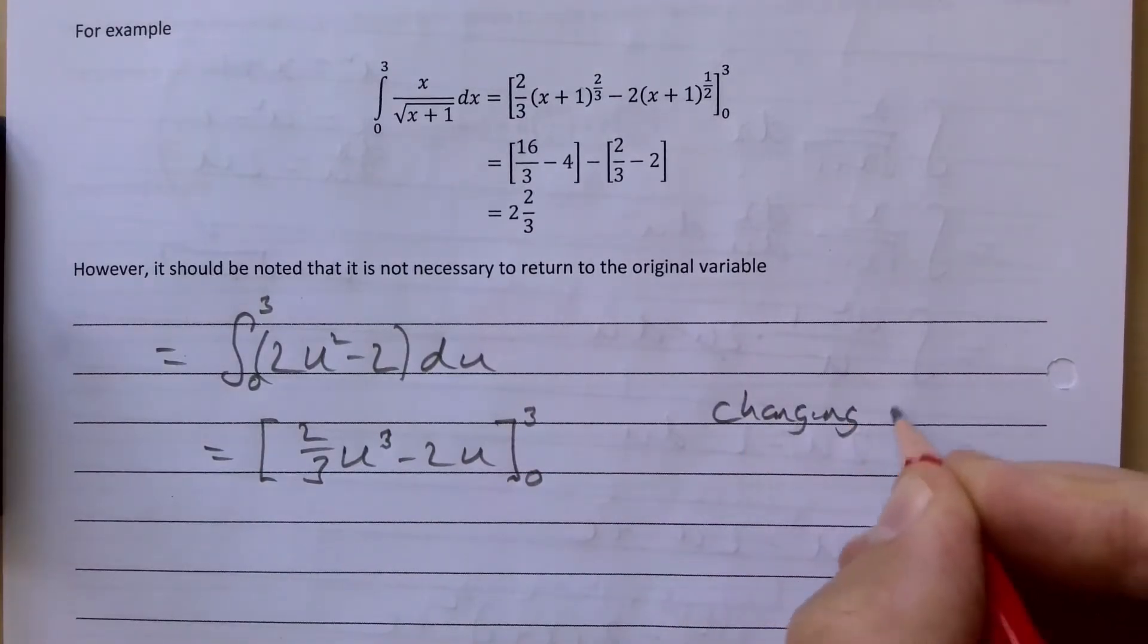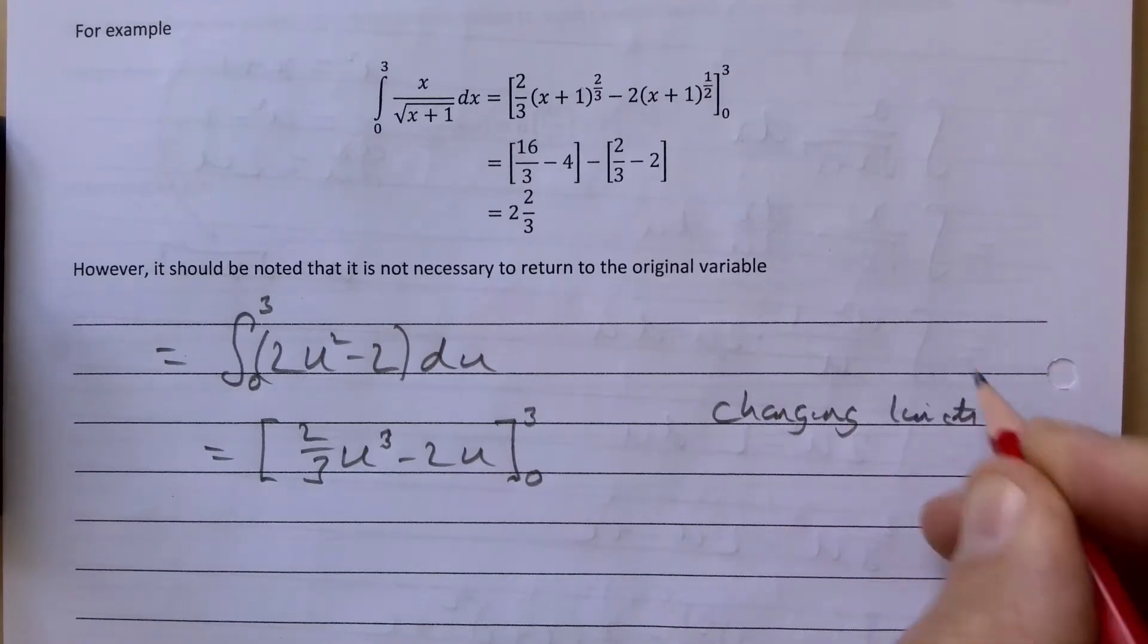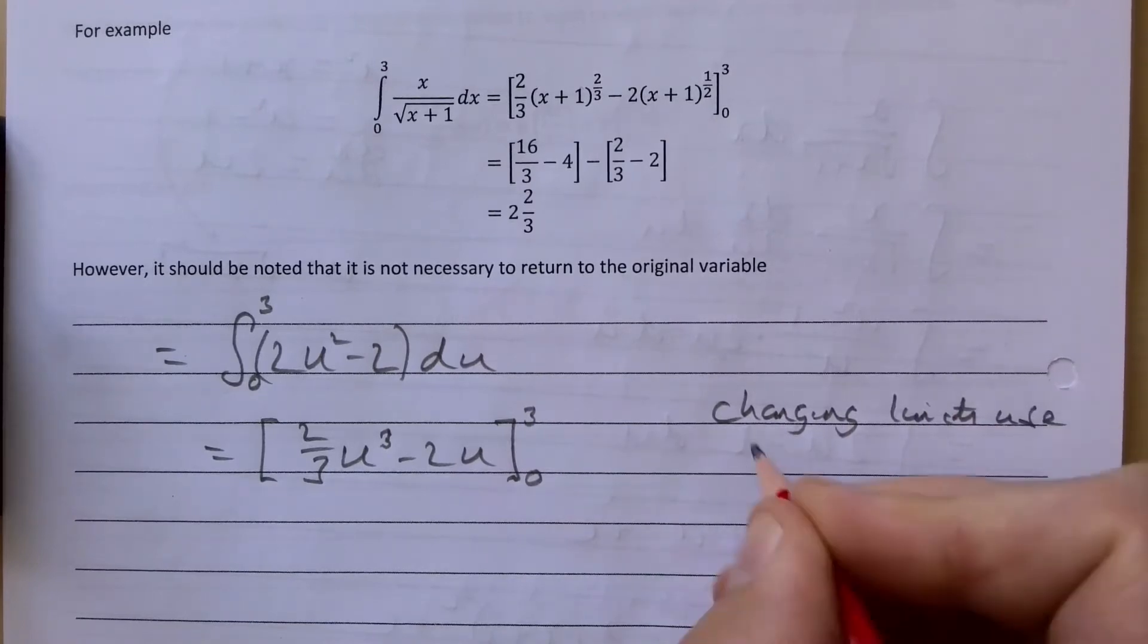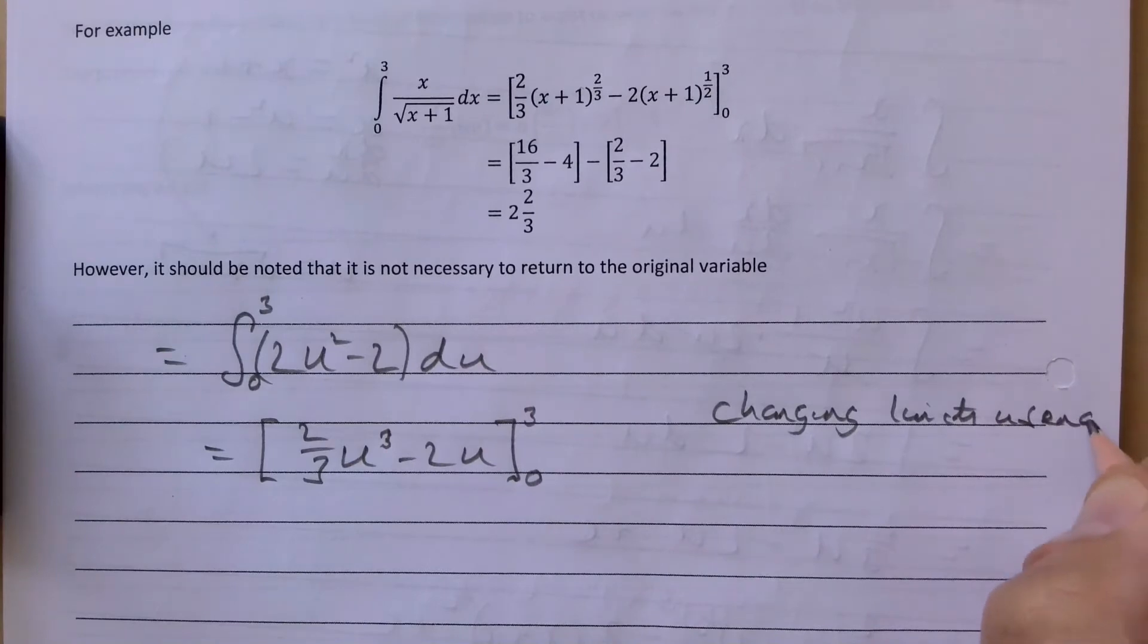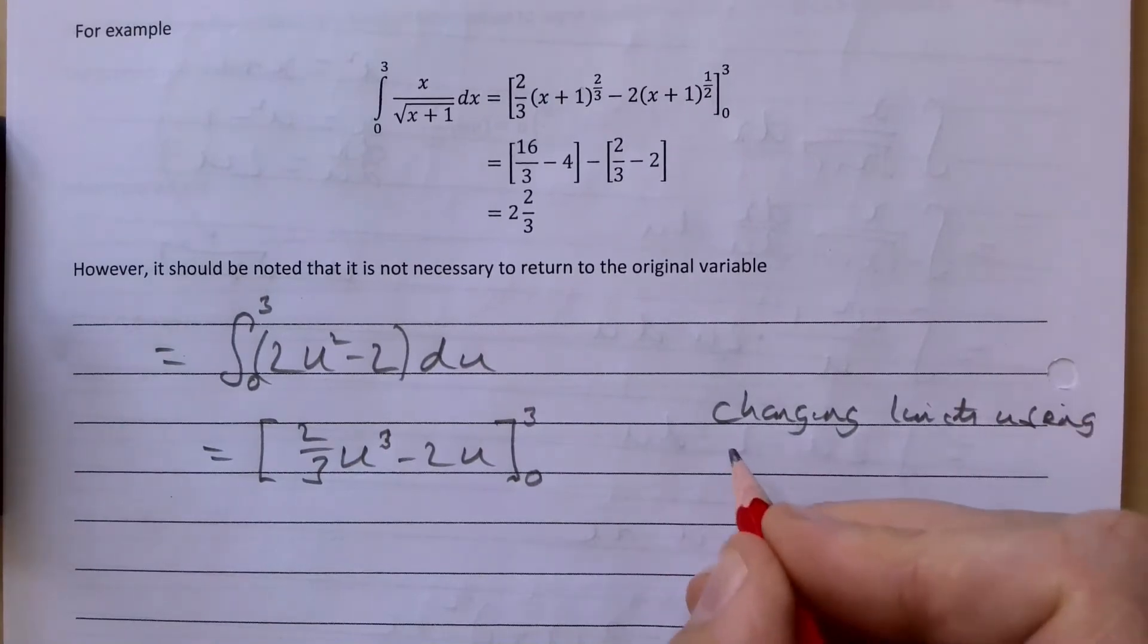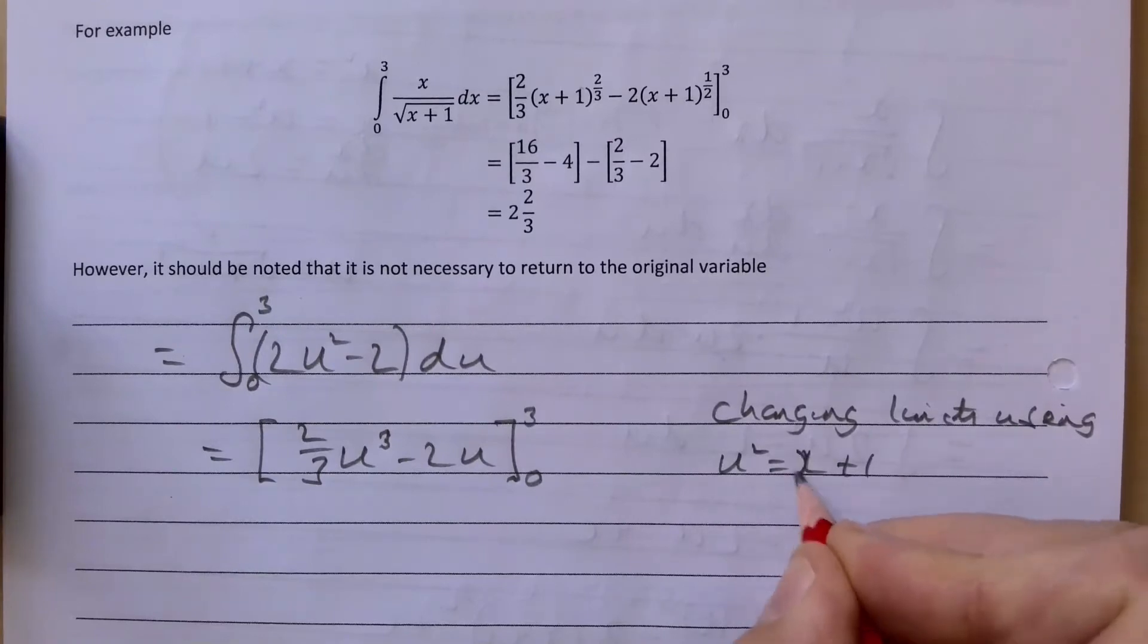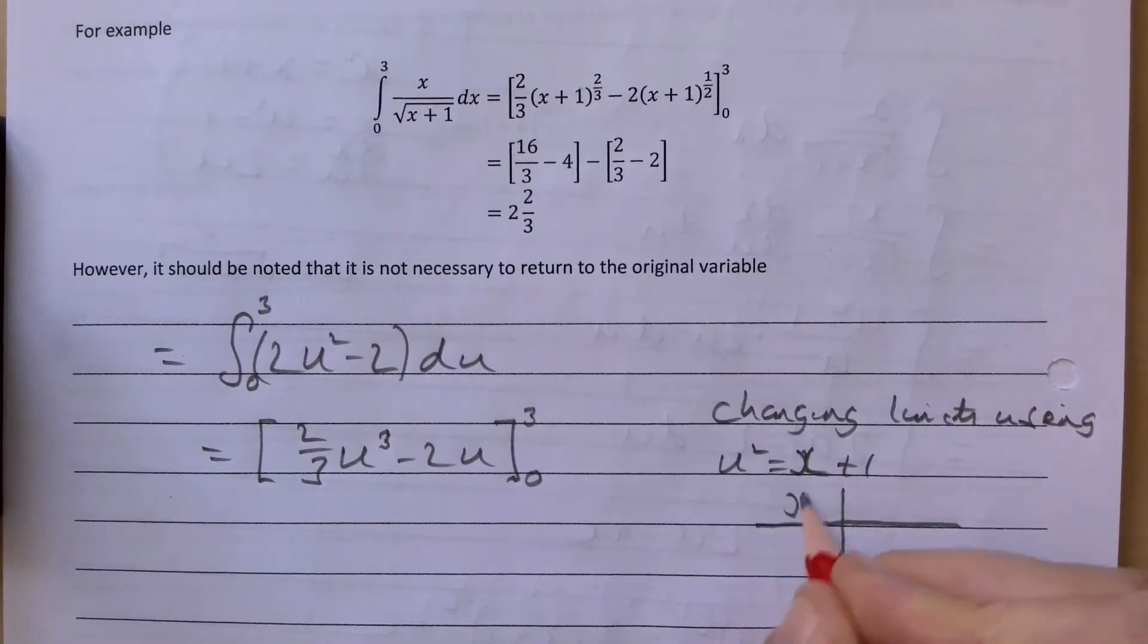So changing limits, using u squared equals x plus 1. We knew our values of x were 3 and 0. For the value of x is 3, if x is 3, 3 plus 1 is 4, so square root of this is going to give us a 2 for a value of u.